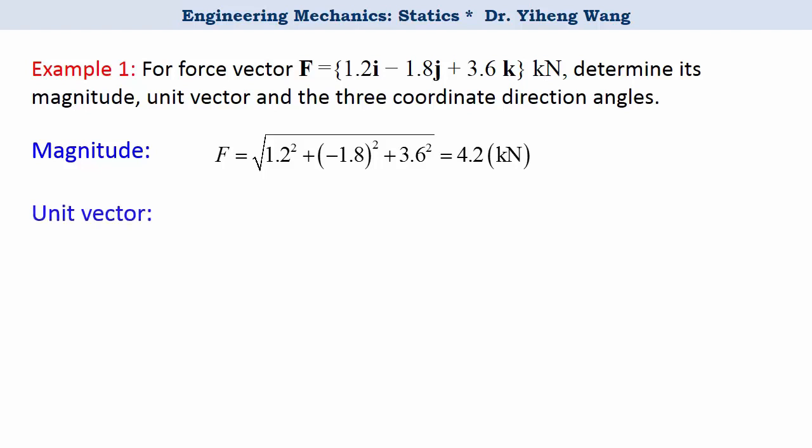And then to determine the unit vector, the unit vector of any vector equals the vector divided by its magnitude. And as you can see, the unit kN gets cancelled out, and the unit vector u_F is a dimensionless quantity. You can simplify it if you want to.